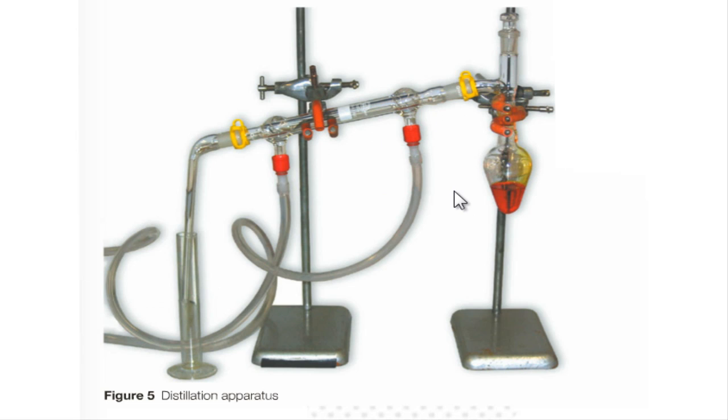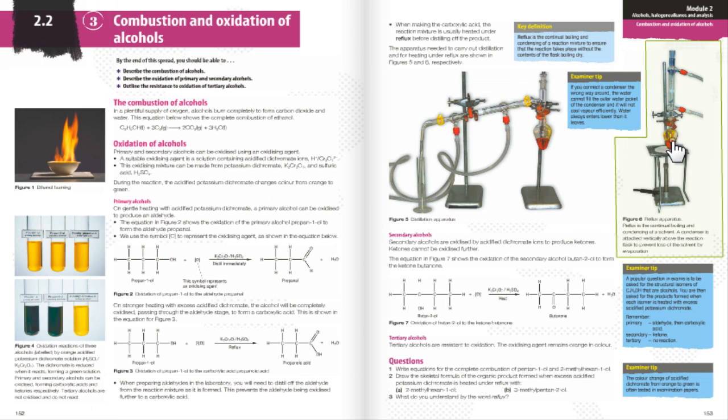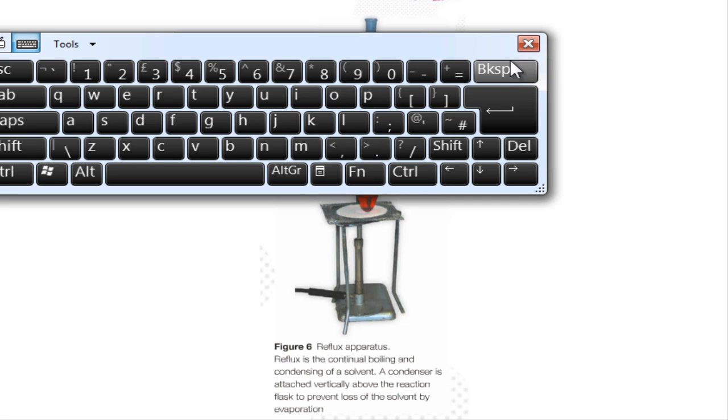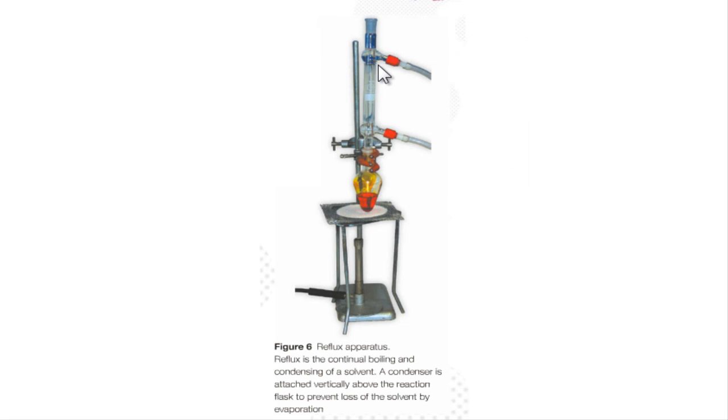The next set of apparatus is the reflux apparatus. This is where we continuously react to form the carboxylic acid. There's a Bunsen burner under there, so you heat the reaction vessel and then the vapours are continuously condensed and it keeps going back into the reaction vessel. Once it fully turns green, then your alcohol is completely oxidised into the carboxylic acid.